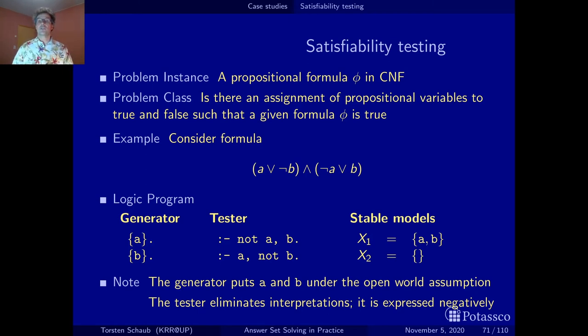The tester eliminates interpretations, that is, interpretations that are no models or counter models. It is expressed negatively, with integrity constraints. There is a neat relationship to formulas in such a case. Let me make this precise with this little example. Each of these disjunctions can be transformed by applying the de Morgan rule. We negate this condition and negate it again so that the logical content stays the same. Because in classical logic, a formula phi is equivalent to not not phi. That's the trick I'm doing right now. Then you see here what this says. It must not be the case that A is false and B is true. This is exactly what this integrity constraint is.